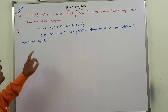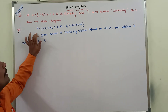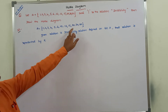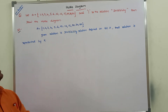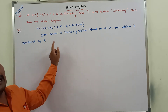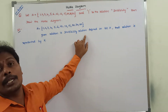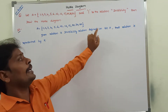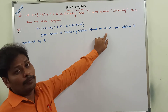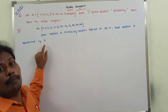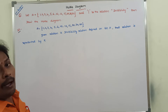So the given set A is equal to the set of {1, 2, 3, 4, 5, 6, 10, 12, 15, 20, 30, and 60}. The given relation is the divisibility relation defined on the set A. That relation is represented by capital R.